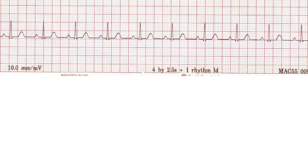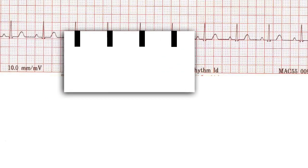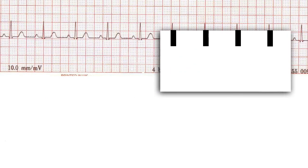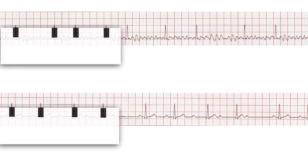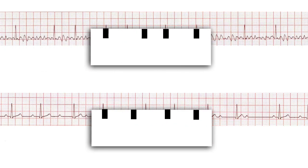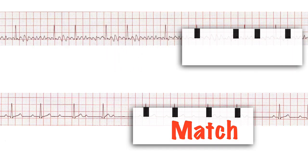Sometimes it's obvious just by eyeballing the rhythm strip. But one of the quickest ways to see more accurately is to take a piece of paper and mark the peak of several consecutive R waves on it. Then move the paper along a few R waves and see if they still line up. If they do, the rhythm is regular. If they don't, the rhythm is irregular and you need to see if there is a pattern to this irregularity or whether it's truly irregular.